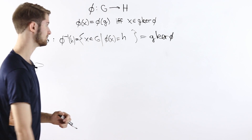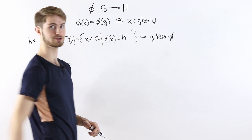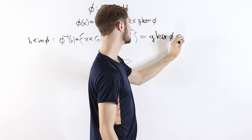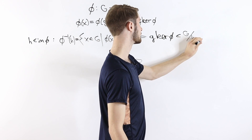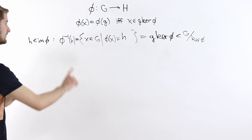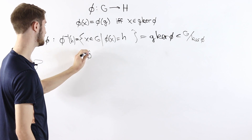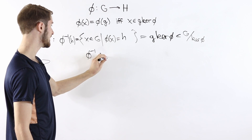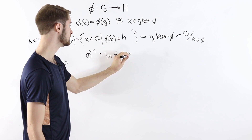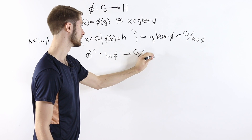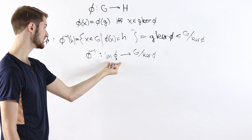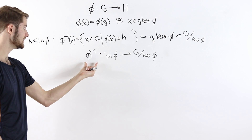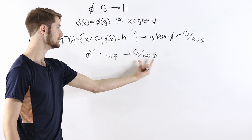Since phi is a group homomorphism, the kernel of phi is a normal subgroup of G, which means the collection of all these cosets forms a group — the quotient group G mod the kernel of phi. This shows that the pre-image map phi inverse, which takes an element to its pre-image in G, is a map from the image of phi to the quotient group G mod the kernel of phi. It takes every element from the image of phi to a coset in this quotient group.